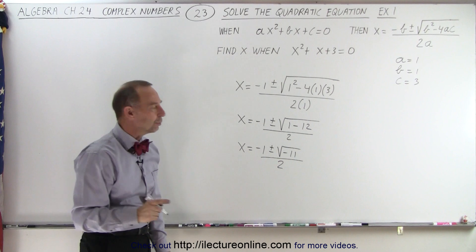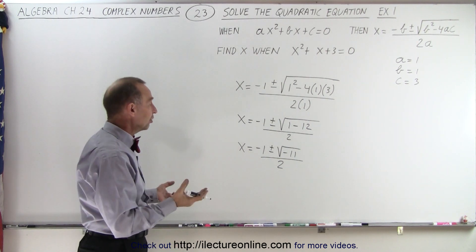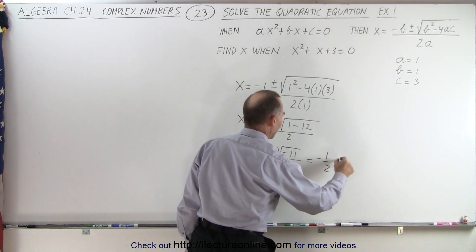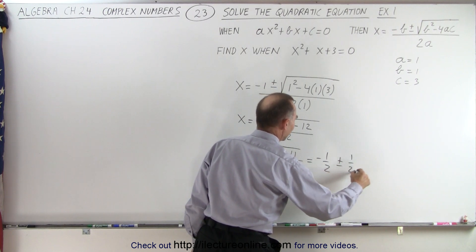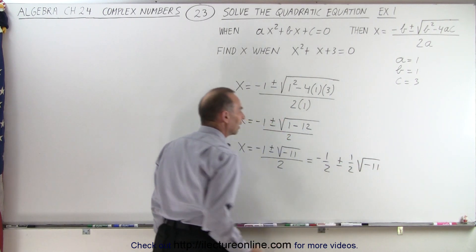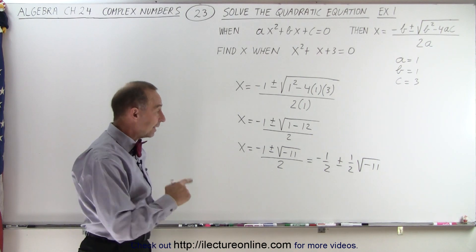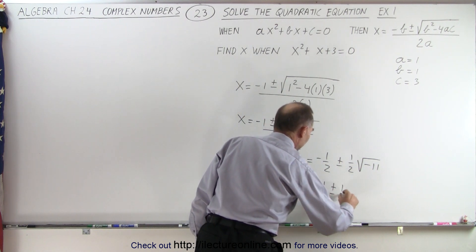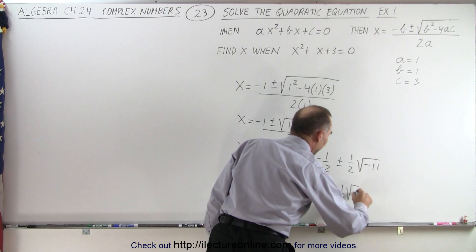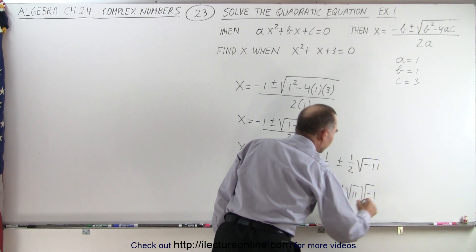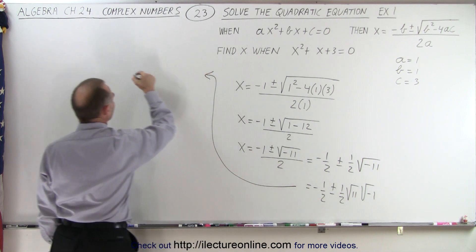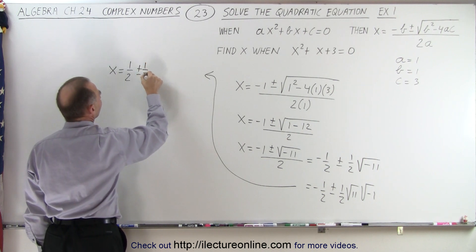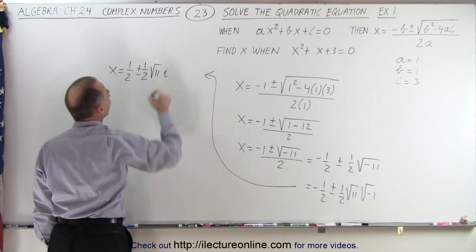And there's the trick — we have the square root of a negative number, which means that's imaginary. So this equals minus one-half, plus and minus the square root of minus 11. Taking that negative 11, I can write it as minus one-half, plus or minus one-half times the square root of 11, times the square root of negative 1. Then x equals negative one-half, plus or minus one-half times the square root of 11, times i.